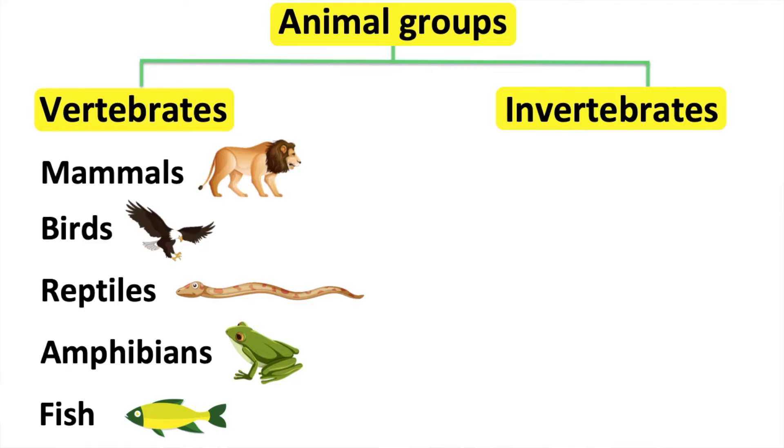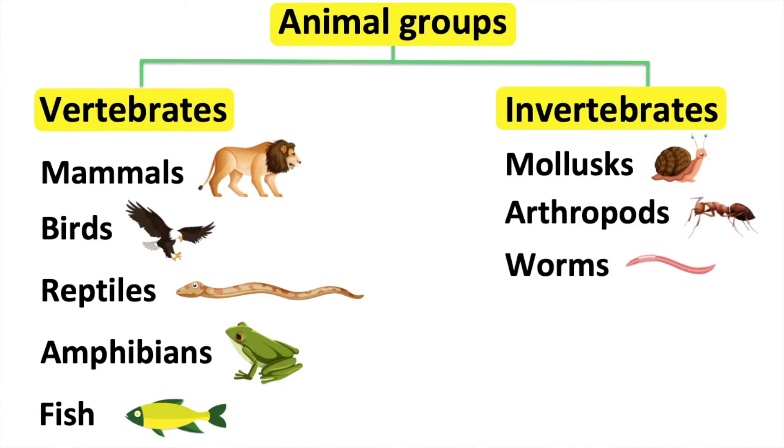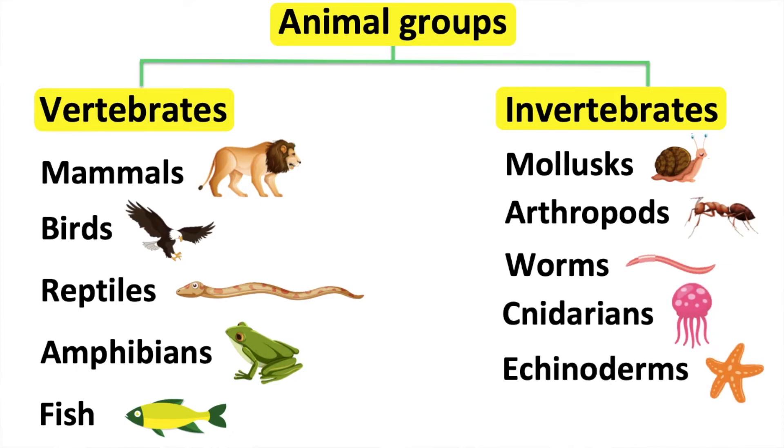There are also different types of invertebrates, which we can put into groups. For example, invertebrates with six legs, invertebrates with more than six legs, and invertebrates without legs. Invertebrates without legs can be grouped into worm-like or not worm-like.